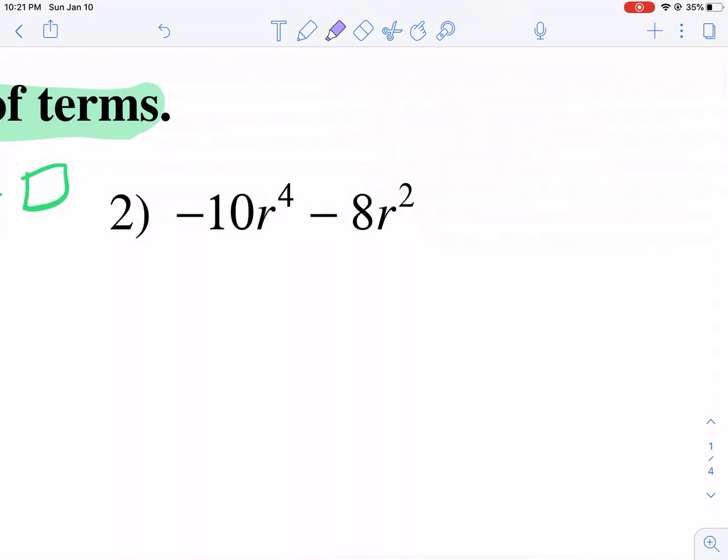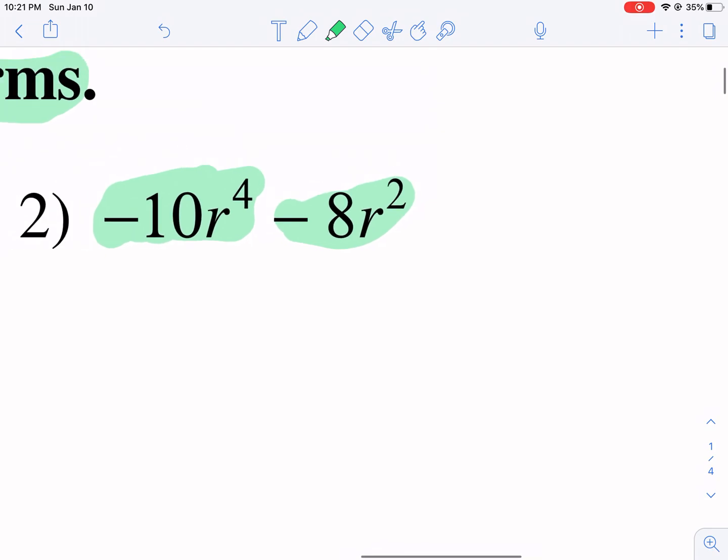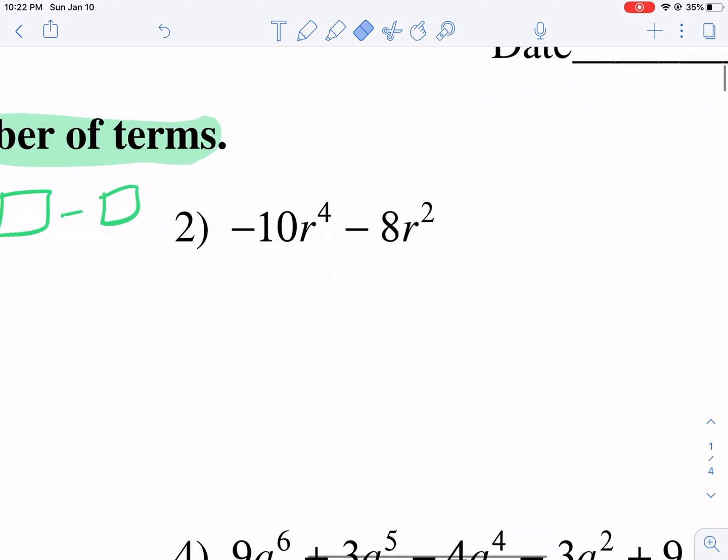Moving on to number two. The easiest thing to identify is the number of terms. And we can clearly see here that there's two terms, we have one term here and we have a second term here. How do I know those are the two terms? Because they're separated by this subtraction sign here.